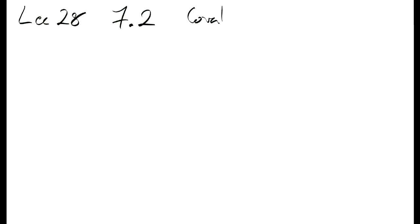Welcome to lecture 28. This is chapter 7.2, Covalent Bonding. This is going to more describe covalently bonded molecules than how covalent bonds form. Covalent bonds forming is a complex and difficult subject.